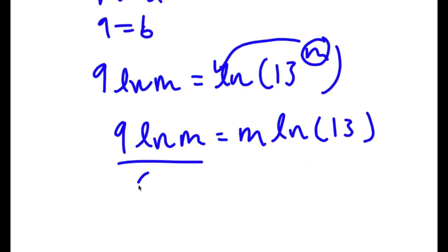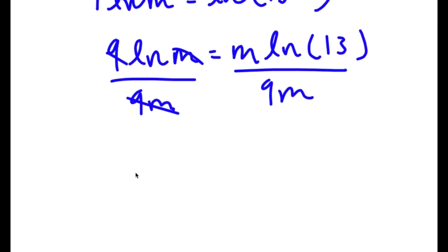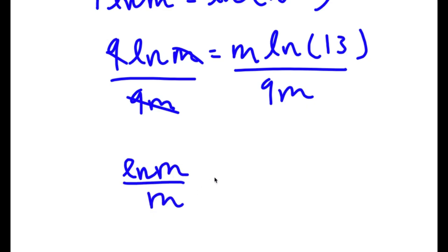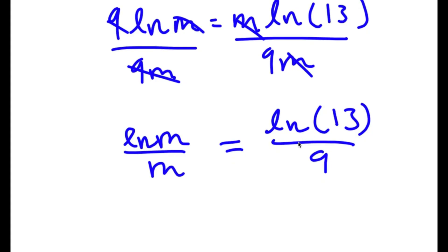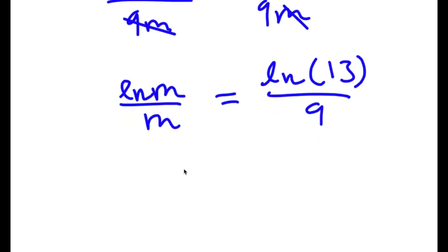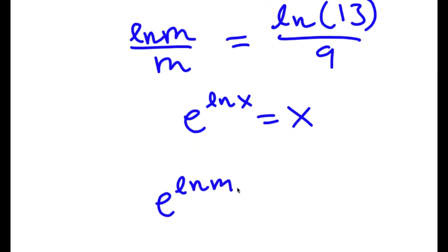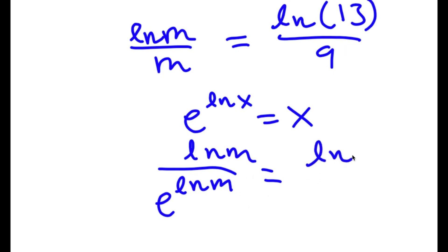Now I'm going to divide both sides by 9m. These cancel out, leaving ln m over m is equal to ln 13 over 9. Now, if I have e to the power of ln of x, this is equal to x because the e and ln cancel out. So e to the power of ln m equals m, meaning I can rewrite m in the denominator as e to the power of ln m. So I have ln m over e to the power of ln m is equal to ln 13 over 9.